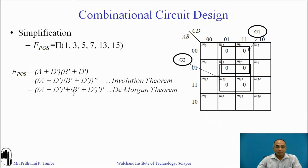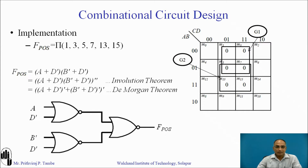So we are implementing this four-variable function with three NOR gates. The first NOR gate inputs are A, D̄; the second NOR gate inputs are B̄, D̄; and the outputs of these two are applied to the third NOR gate, implementing a function in POS form. Always remember: to implement any Boolean function or combinational circuit using NOR-NOR method, your expression must be in POS form. Apply involution to the POS expression first, then apply De Morgan's theorem, and you have your NOR-NOR implementation.